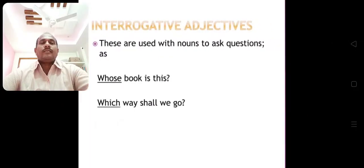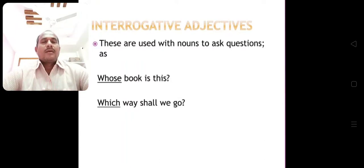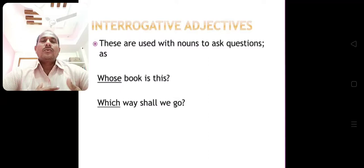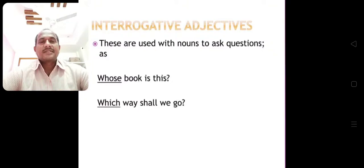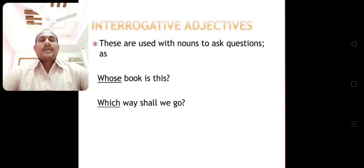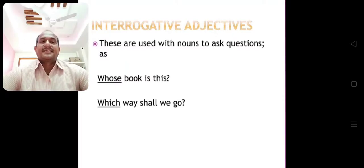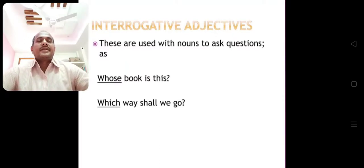Then interrogative adjectives. These are used with nouns to ask questions. For example: 'Whose book is this?' and 'Which way shall we go?' Interrogative adjectives are used with nouns to ask questions in sentences.